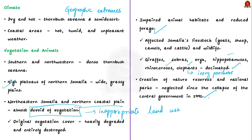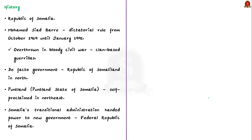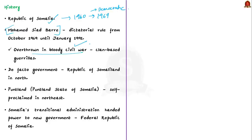Regarding Somalia's history, Somalia was known as the Republic of Somalia and was formed in 1960. From 1960 until 1969, Somalia was a democratic state, but a small group illegally overthrew the existing government and made Siad Barre the president. He was later overthrown by opposing clans of Somalia in 1991.